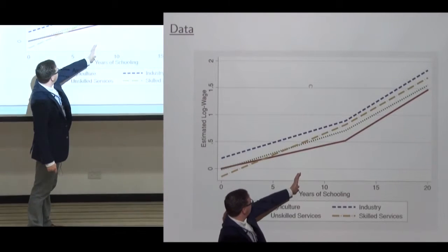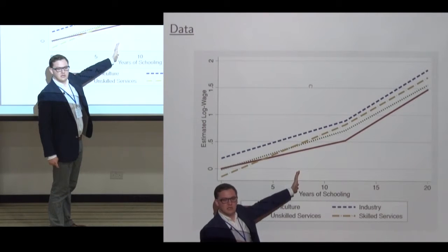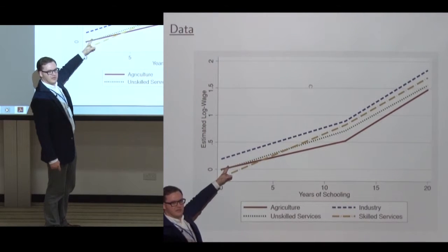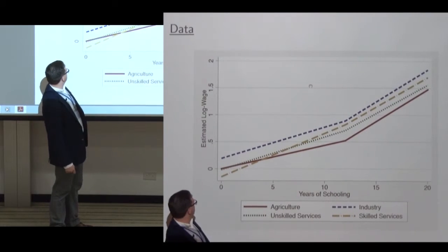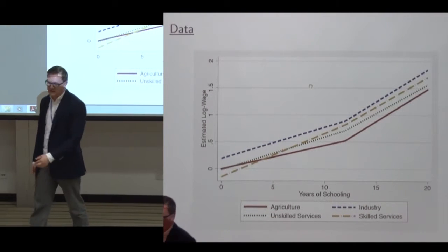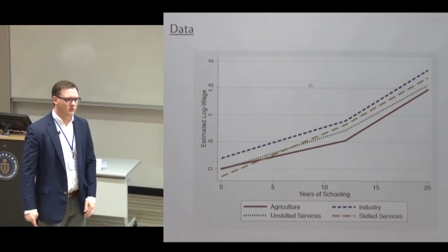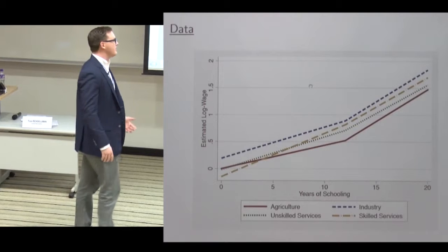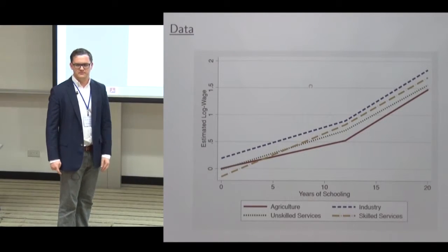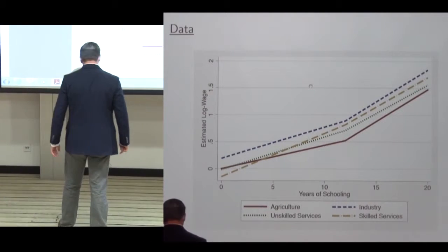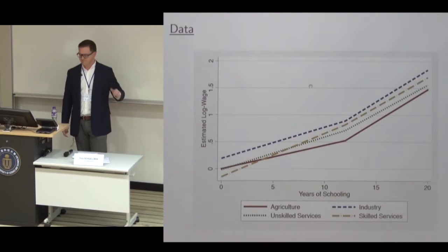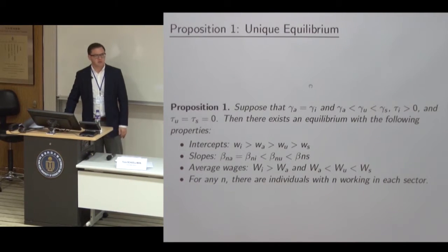Even if you ignore industry, the next problem is that skilled services pays everyone with more than seven and a half years of schooling a higher wage. Under the sectoral view, people with zero to one years of schooling should choose agriculture, those with one to three years unskilled services, and anyone with more than five years skilled services. But all American workers have more than eight years of schooling. It's logically very hard to say, if there are no differences in unobserved ability and schooling is all I see, then basically all workers should be in industry or skilled services. On the other hand, it's pretty easy to rationalize this with the selection view — the reason the wage lines have different slopes is just that workers are of different types.